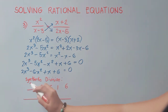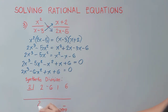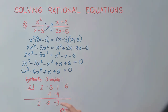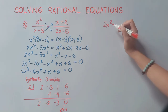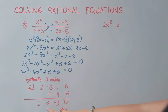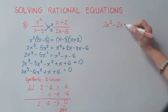Let us try positive 2: bring down 2, multiply by 2 gives 4, add to −6 gives −2, multiply by 2 gives −4, add to 1 gives −3, multiply by 2 gives −6, which equals 0. So x = 2 is one of our answers. The remaining constants give us 2x² − 2x − 3.